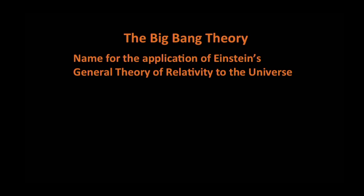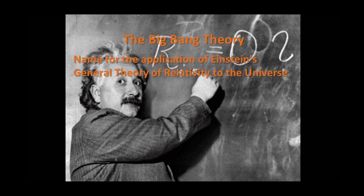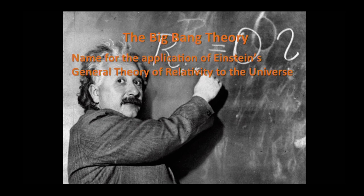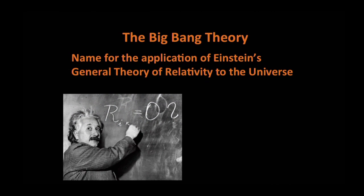Let's start with the Big Bang Theory — that is also the name of a TV show, but it's the name for the application of Einstein's general theory of relativity to the entire universe. Here is Einstein writing down his theory applied to the universe; that equation is where we get all of cosmology from. It tells us the universe started hot, is expanding and cooling, and structures like galaxies and clusters formed by gravitational collapse.